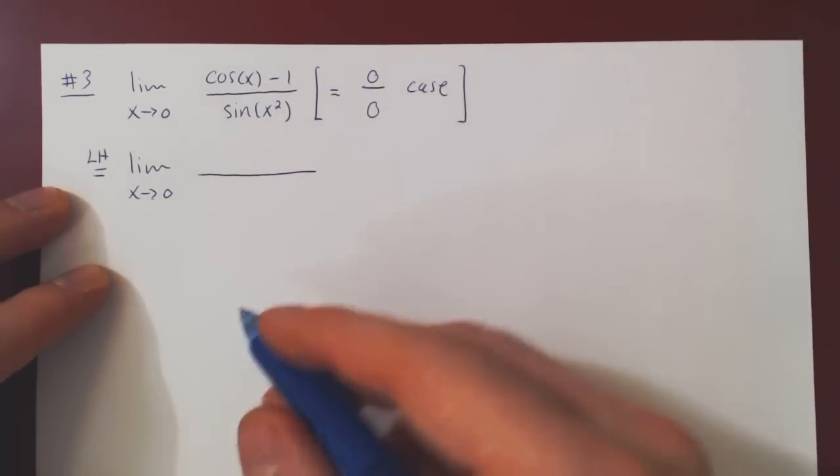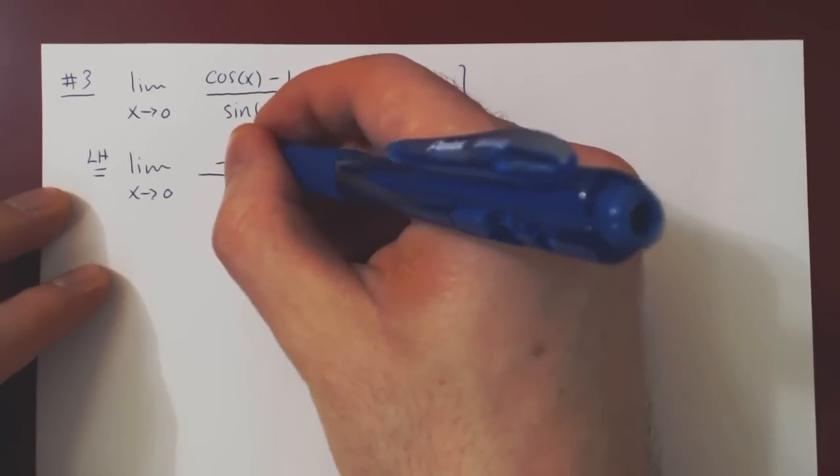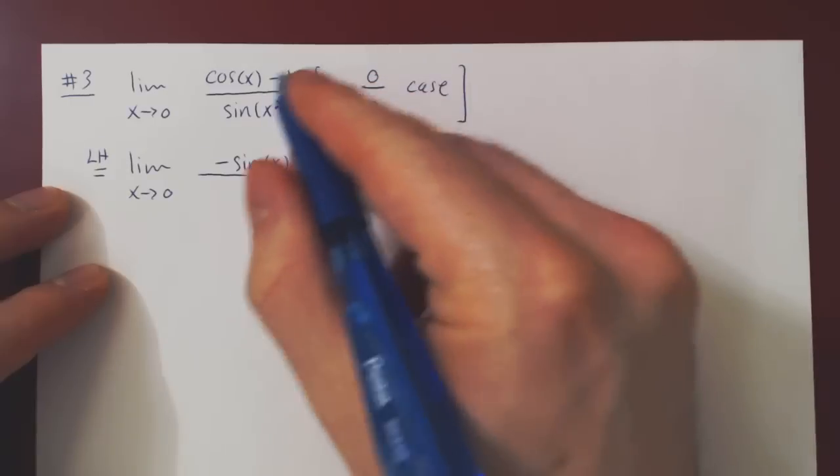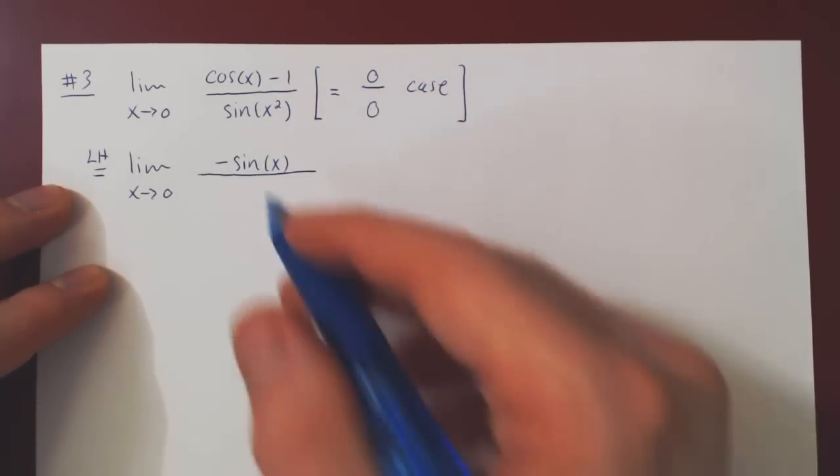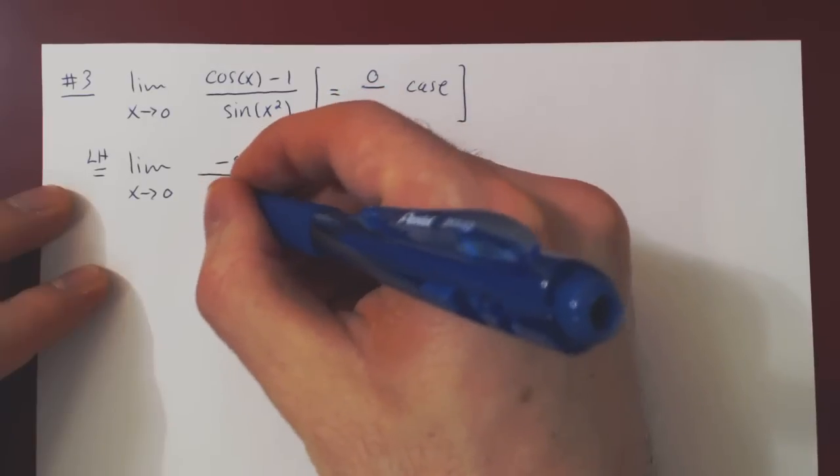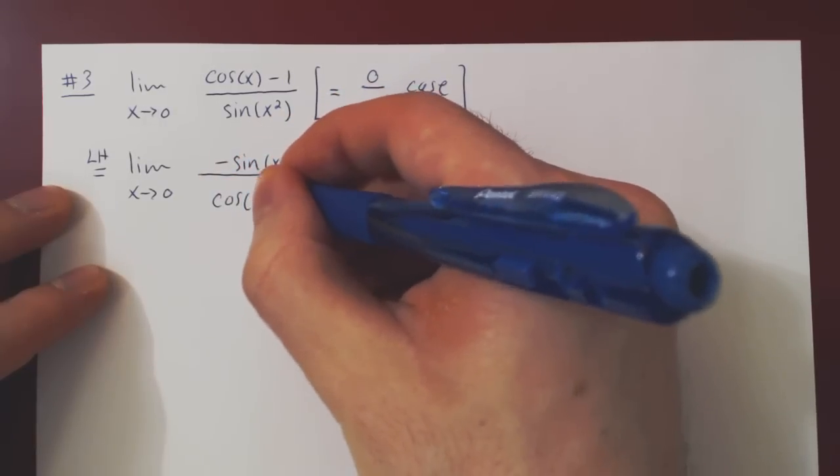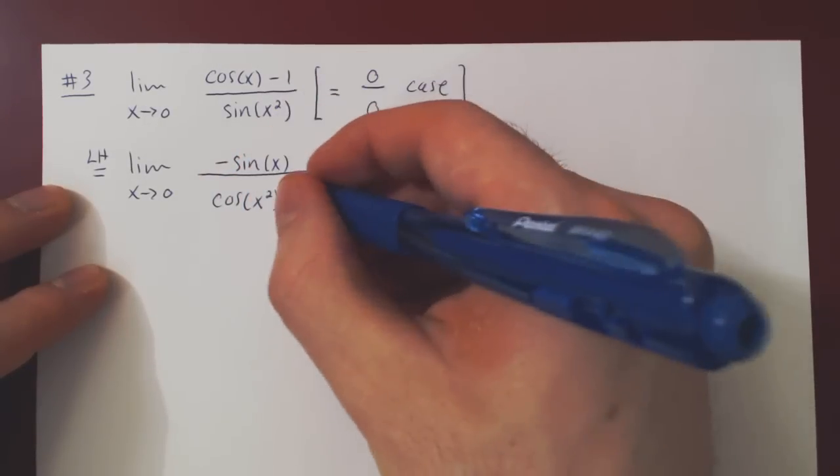The derivative of cosine is negative sine, minus the derivative of 1, which is 0, over, and here we'll have to apply the chain rule, the derivative of sine is cosine times the derivative of x squared, which is 2x.